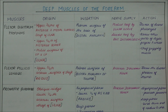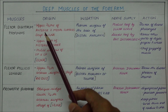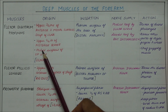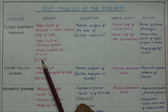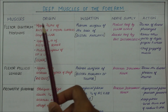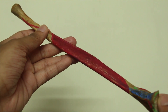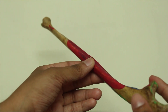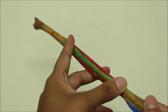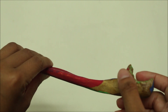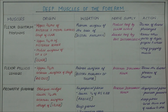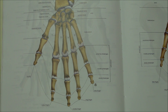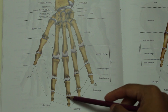The flexor digitorum profundus originates from the upper three-fourths of the anterior and medial surfaces of the shaft of the ulna, as well as the upper three-fourths of the posterior border and the medial surfaces of the olecranon process and the coronoid process of the ulna. It inserts into the palmar surface of the base of the distal phalanges.